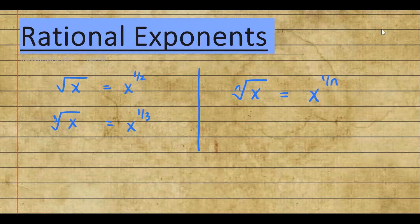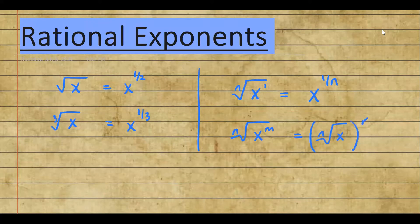Now what if the numerator is not one anymore — what if it's some number m? If you have the nth root of x to the m power, that can also be written as the nth root of x, all raised to the m power, so the m can be pulled out from the radical symbol. In exponential form, you write this as x to the power m over n. That's the rule we'll use, along with the laws of exponents, to simplify expressions with rational — that is, fractional — exponents.